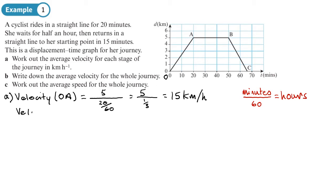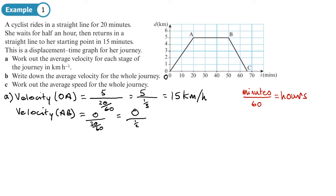Now for the velocity from A to B — that's the flat part. The displacement is zero, because she's not moving. Zero divided by the time between A and B, which is 30 minutes (30/60 = half an hour), gives zero divided by a half, which is zero kilometers per hour. We probably knew that without doing the working.